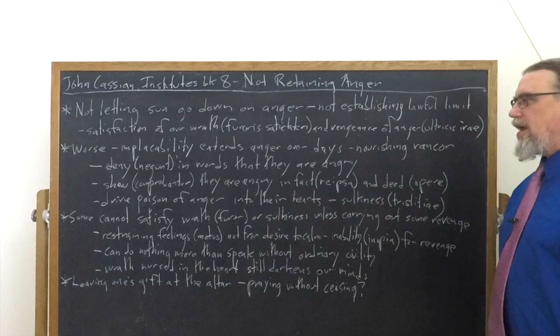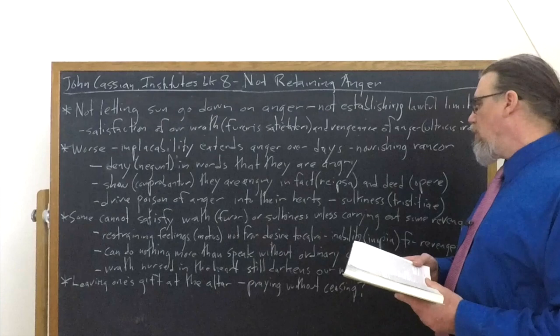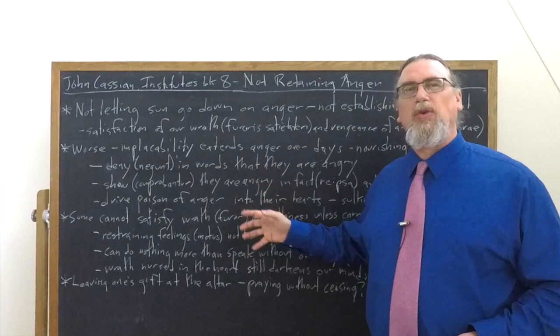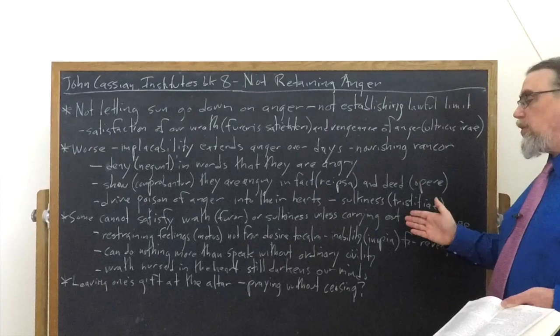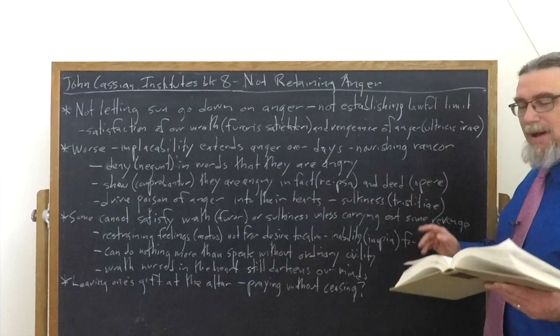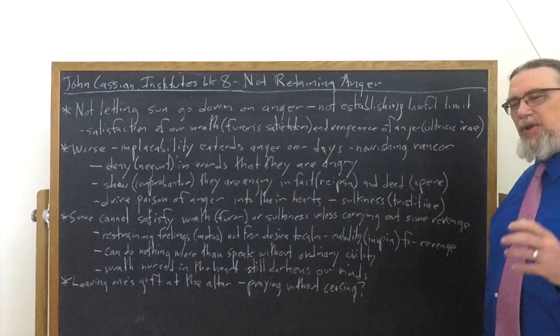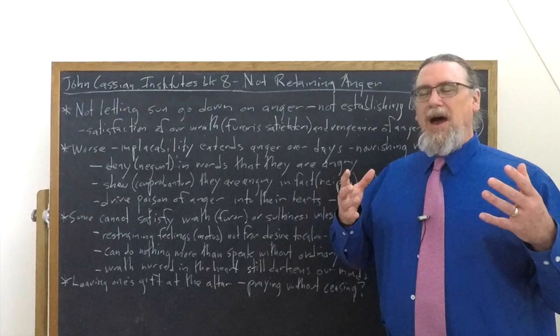It could be whatever means you want. But it's being driven by, as he says, both wrath and sulkiness. And so he tells us that this is even more problematic. We're not restraining the feelings, the emotions, the motus within us, the drive, from a desire to calm them, which would be a good motive. Instead, what we're trying to do is deal with our own inability, or as it is translated here, lack of opportunity, in opium. And opus is deed, so in opium means like being in a condition, being unable to carry out what it is that you want to do. So an inability to carry out a sort of revenge.